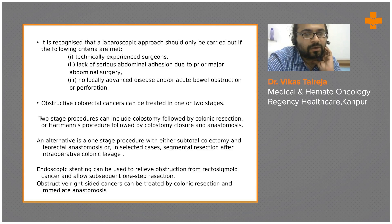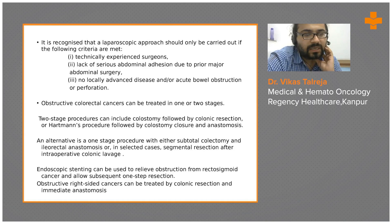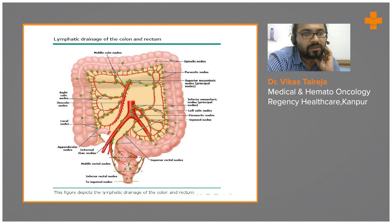Obstructive colorectal cancers can be treated in one or two stages. The two-stage process includes colostomy followed by colonic resection, or the Hartmann procedure followed by colostomy closure and anastomosis. An alternative is a one-stage procedure with either subtotal colectomy and ileorectal anastomosis in unselected cases, or segmental resection after intraoperative colonic lavage. Endoscopic stenting can relieve obstruction from rectosigmoid cancers and allow subsequent one-step resections. Obstructive right-sided cancers can be treated by colonic resection and immediate anastomosis.